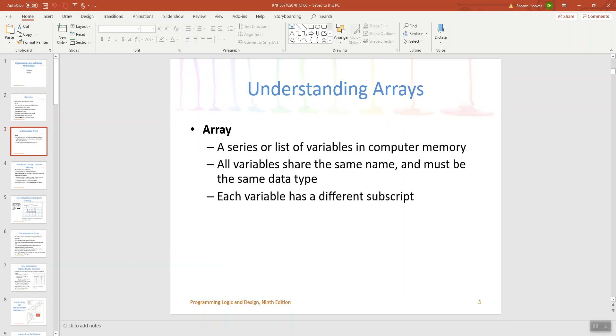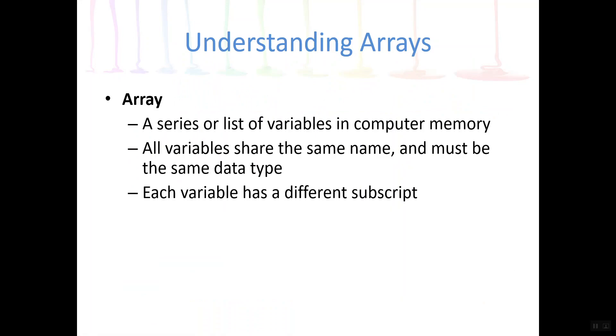An array is a series or list of variables that are stored together in computer memory where they go by just one name and they all have the same data type.